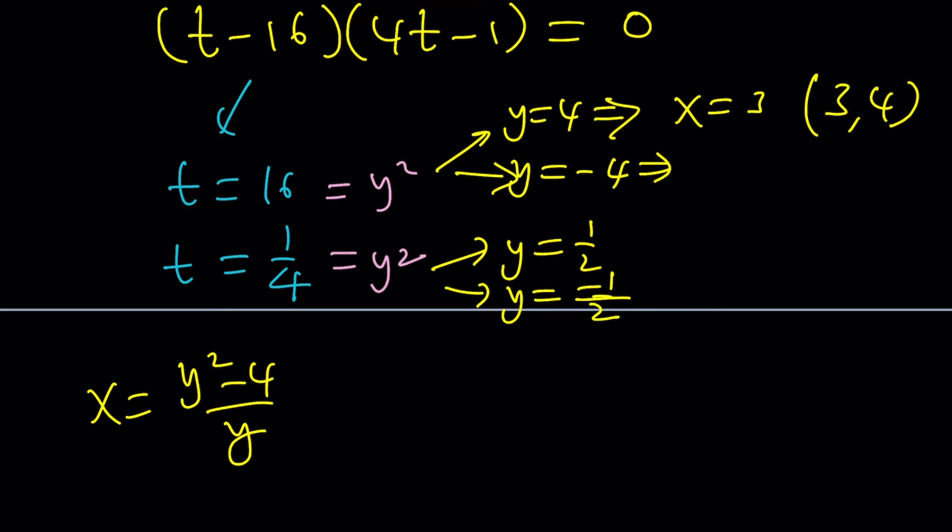For example, if you plug in negative 4, you're going to get 16 minus 4 again, 12. But 12 is this time divided by negative 4, which is going to give you a negative 3. And this should tell you that there is some type of symmetry. Not completely, but x, y's maybe.